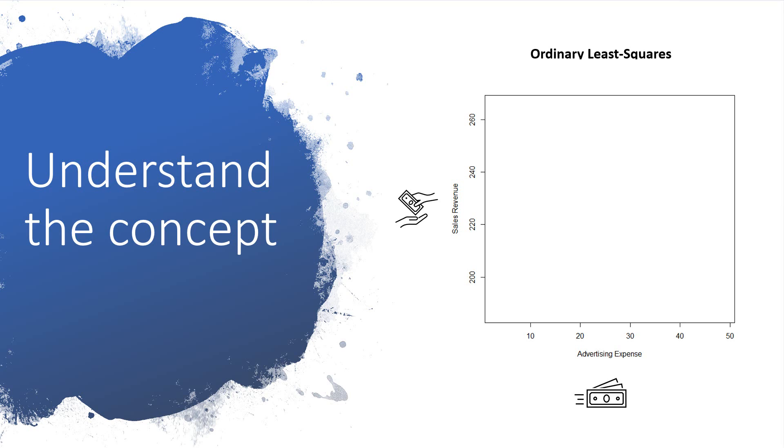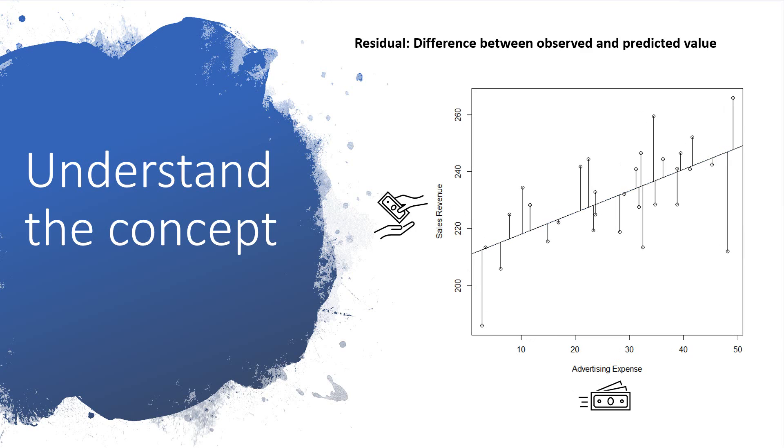This is best demonstrated visually. First, let's plot both variables with the independent variable plotted along the x-axis and the dependent variable plotted along the y-axis. Next, let's add the points representing the observations in our data. Finally, let's draw a line through the points. For each of those points, let's draw a line from the point to the line of best fit. This is plotting the residuals.